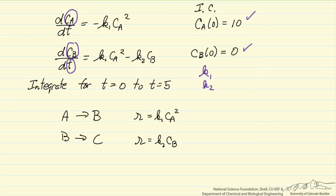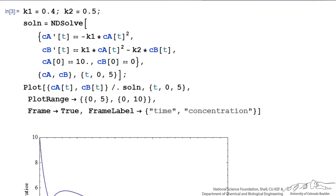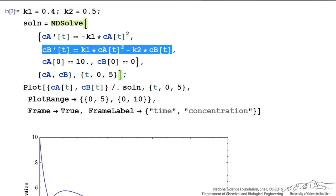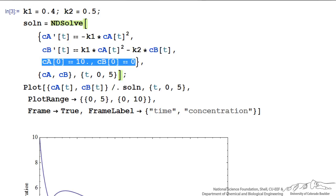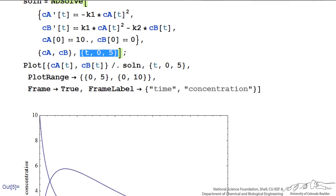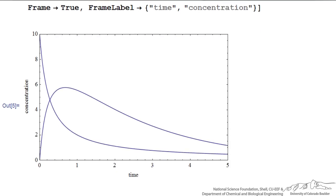Let's look at the Mathematica program to solve these differential equations first. We start with the differential equation where I'm given the values of the rate constants in order to solve it. These are the values we'll manipulate later using the Manipulate command. Here is the first differential equation, here is the second differential equation, then we have the initial conditions, the variables we want to solve for, the independent variable and its range, and then the plot commands. When we hit Shift-Enter, we get the output — we're plotting CA, the curve that's decreasing with time, and CB which goes through a maximum.